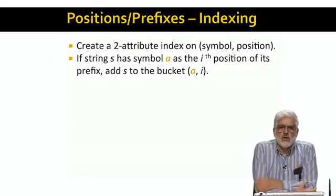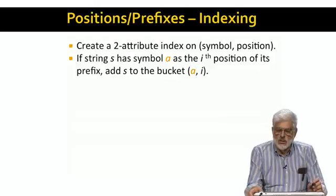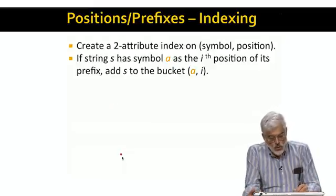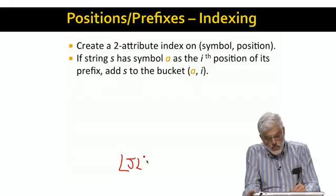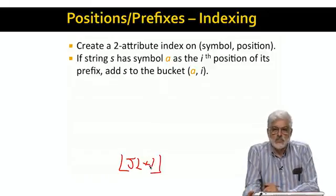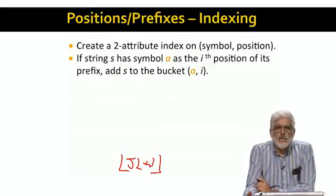To index the string S, we look at all the positions in its prefix. The definition of the prefix hasn't changed. It's still the floor of J L plus 1, where J is the upper limit on the Jaccard distance and L is the length of the string S. We put string S into the bucket AI for all positions I that are part of S's prefix, where A is the symbol that S has in its ith position.